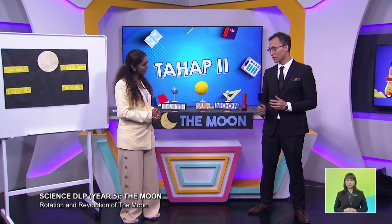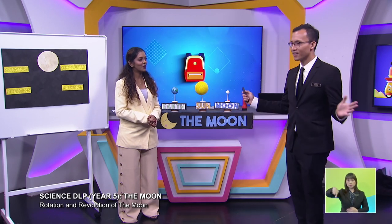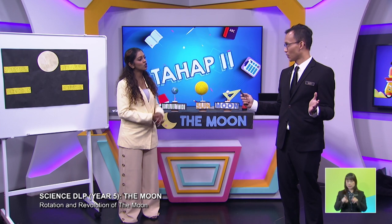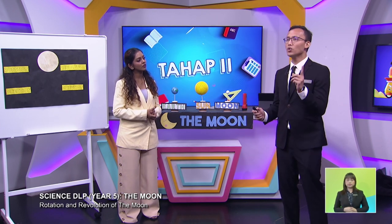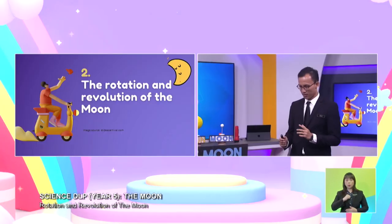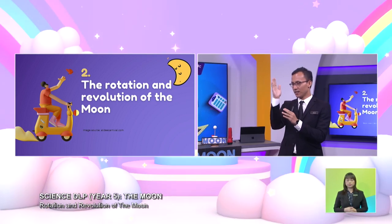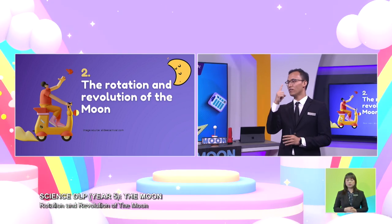So in this segment, thank you Tivia. We are going to learn about the movement of the moon. There are actually two important movements of the moon. The first movement is called rotation. Rotation is when the moon rotates on its own axis — its own invisible line. It rotates on its own axis.